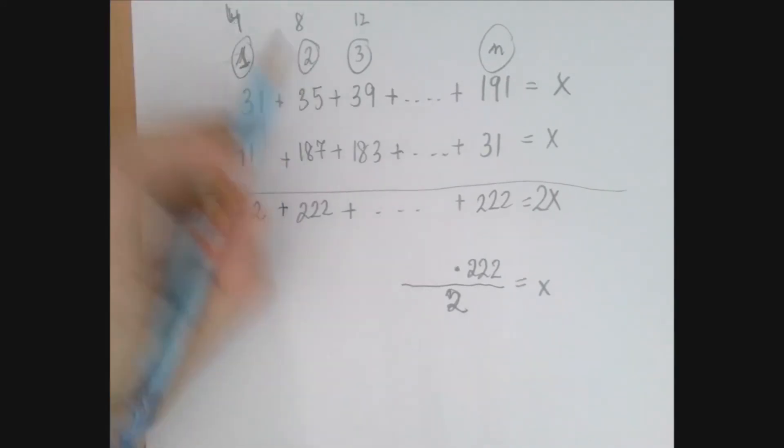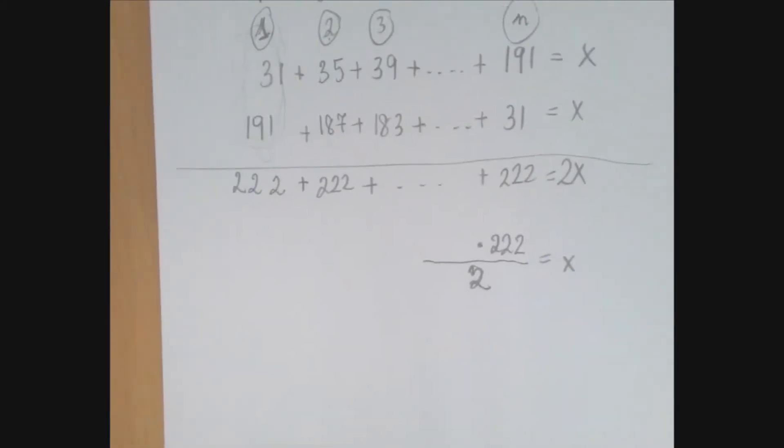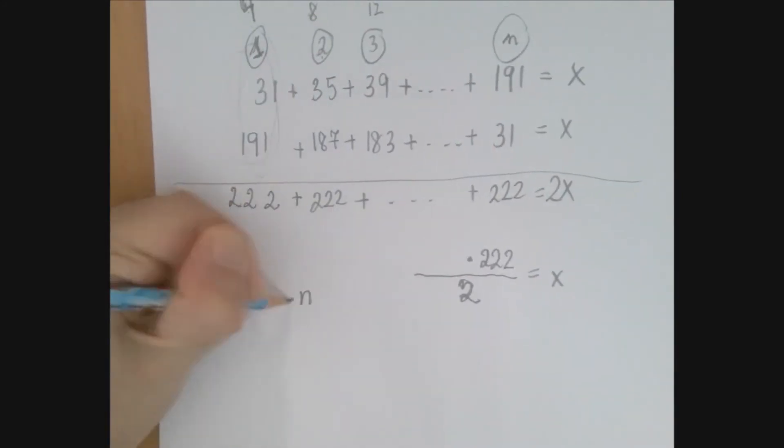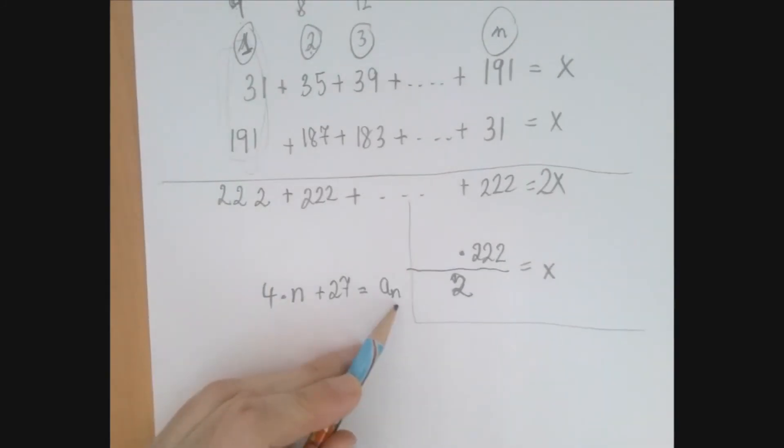And when we multiply two by four, we get eight, but we need 35, we're off again by 27. So as it turns out, if we take the label n and we multiply it by four and add 27, we're going to get the nth number.